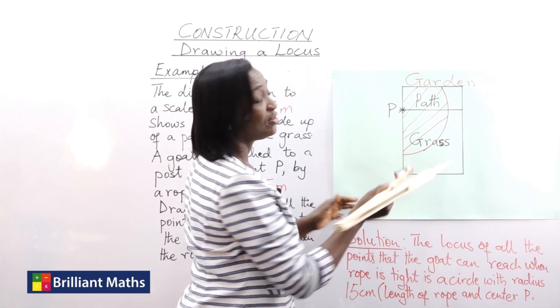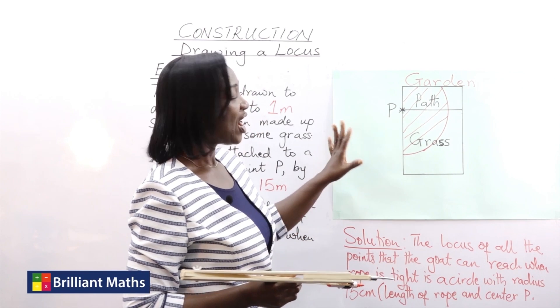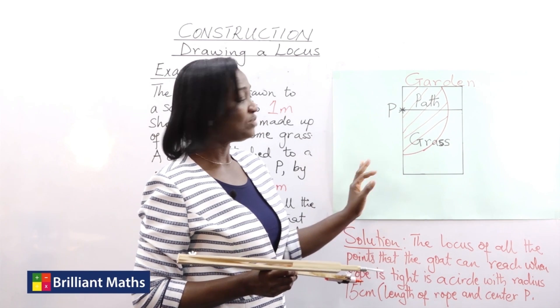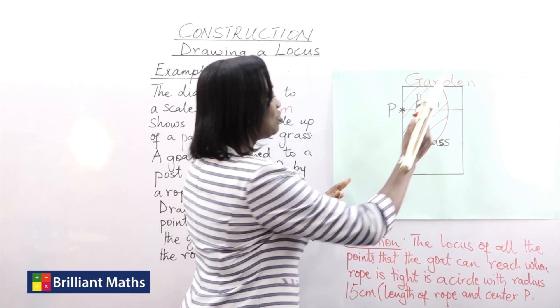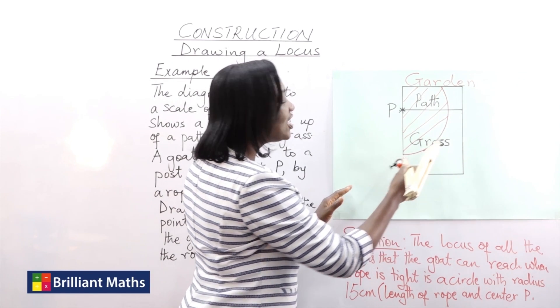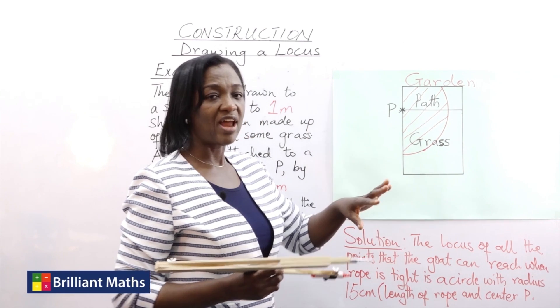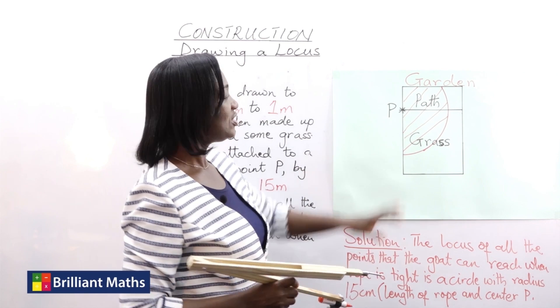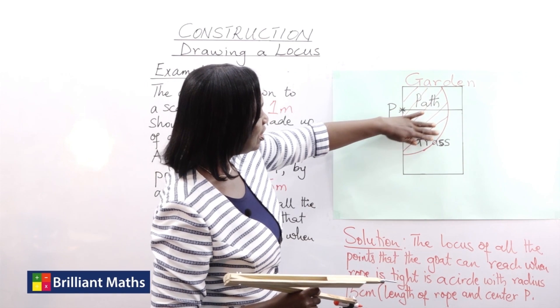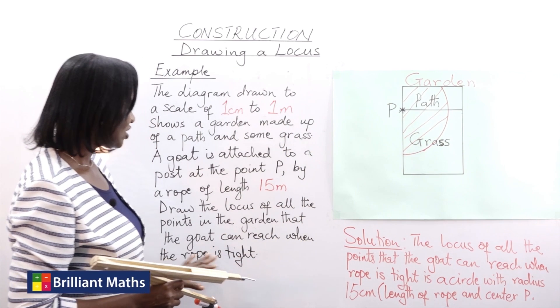Like I said earlier on, construction demands accuracy. So please make sure your measurements are correct. This radius will be 15 centimeters by the construction but in real life it will be 15 meters.